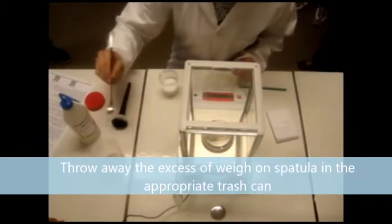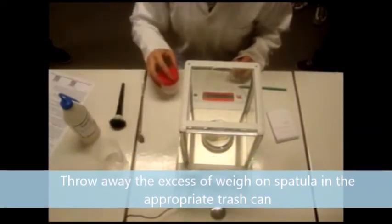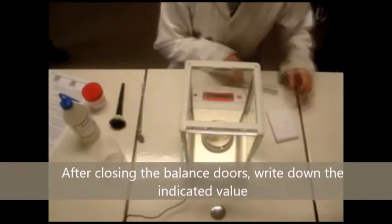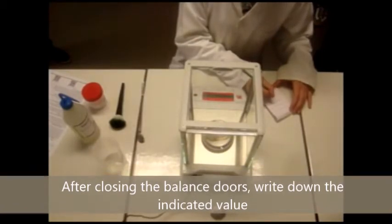To avoid the excess of weight, add spatula in the upper-pellet wash bottle. After closing the balance doors, write down the indicated weight.